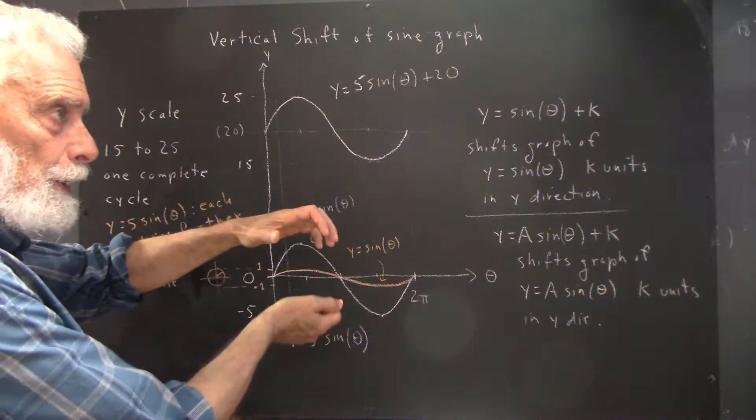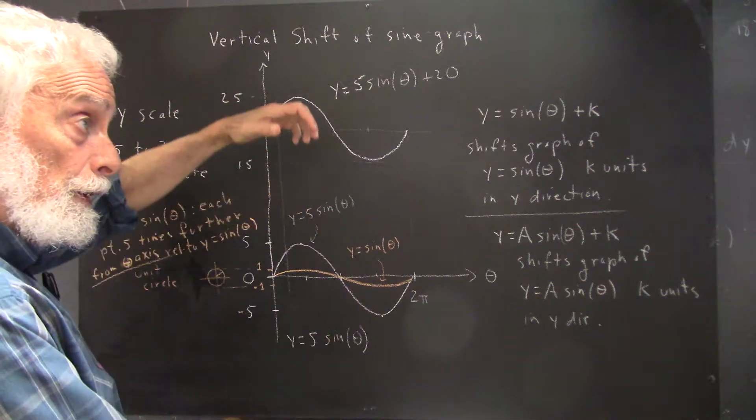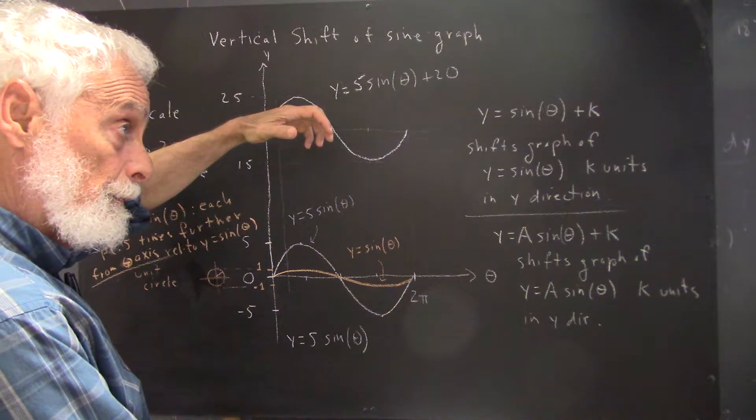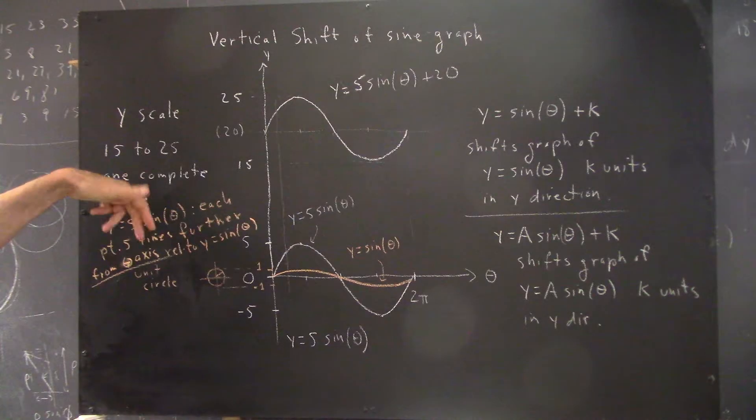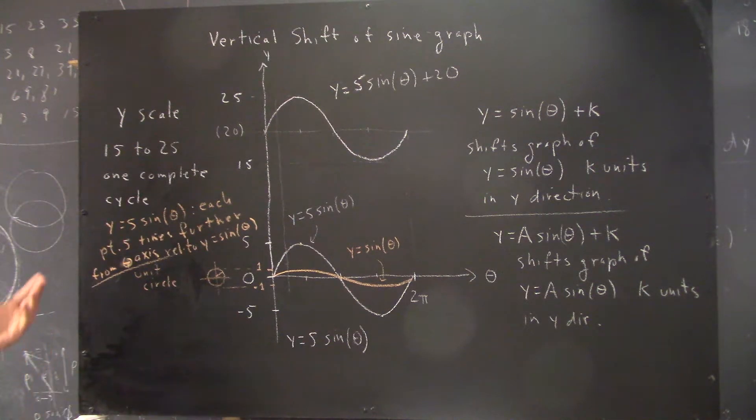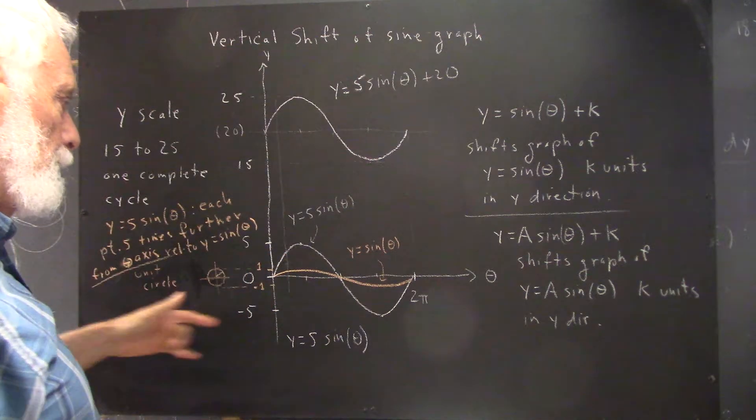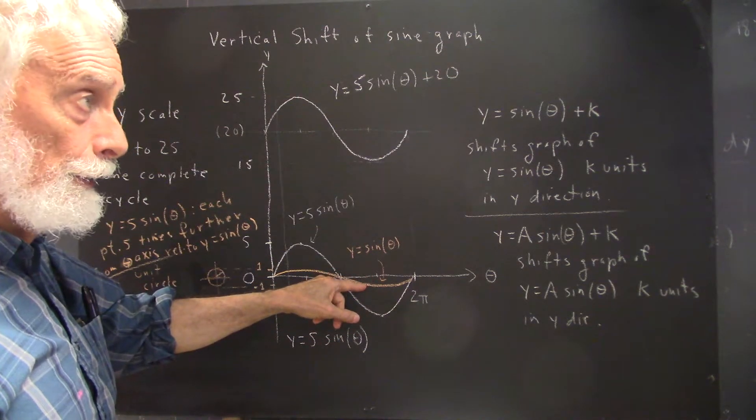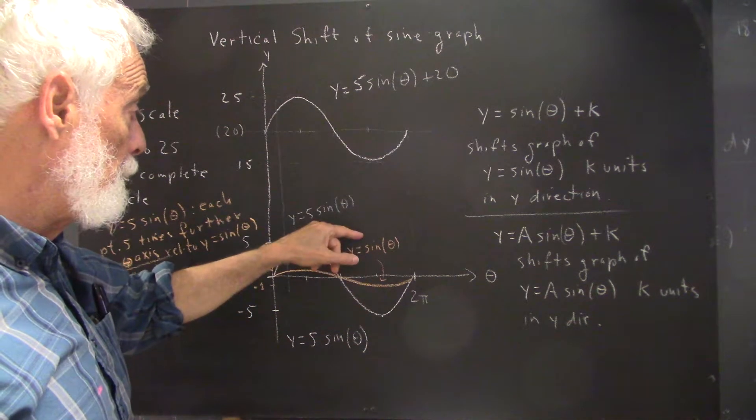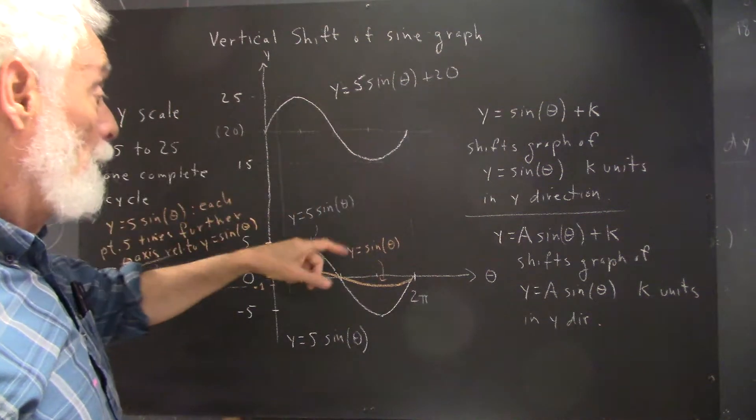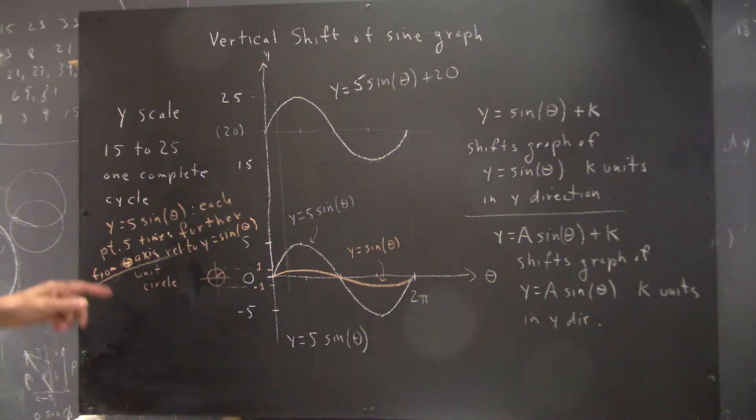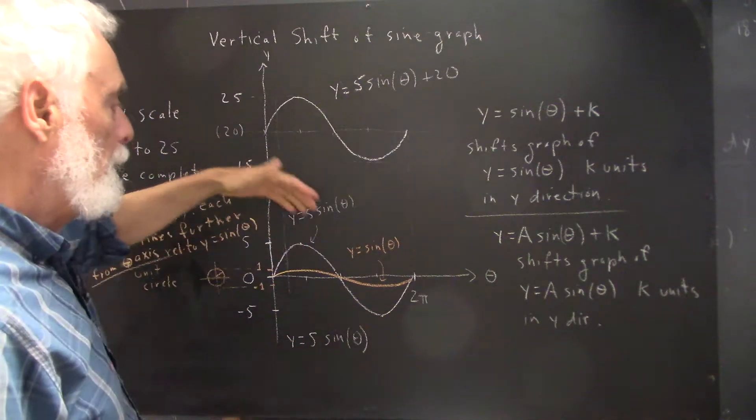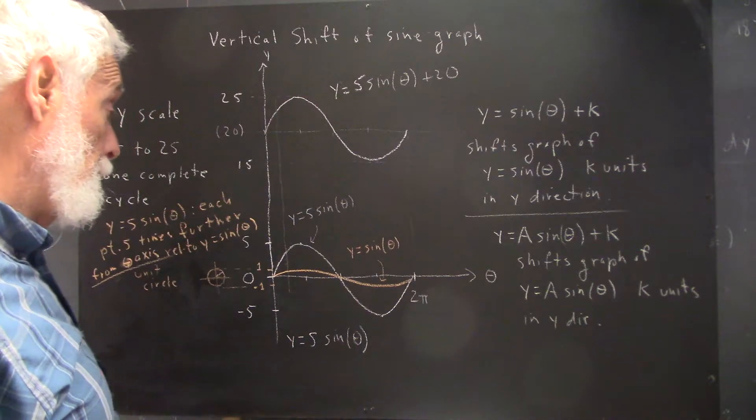We essentially stretch the graph in the vertical direction by a factor of five. I would have to qualify that on the same side of the axis. So we don't take this point down here and move it five times further by moving it up here. Although that would satisfy the statement that we move it five times further, it's clear implicitly that we're going to move it on the same side of the axis.